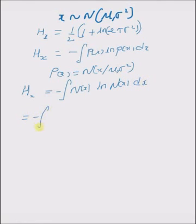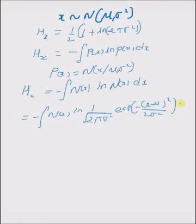which is equal to minus integral N of X. Now, using the definition of a normal distribution, that is 1 by square root of 2 pi sigma squared exponential minus (X minus mu) squared by 2 sigma squared dx.